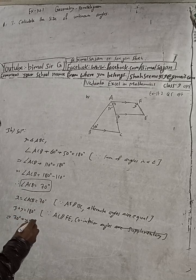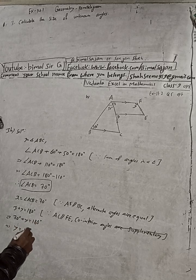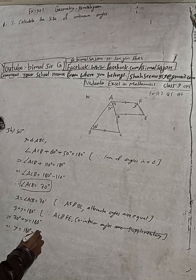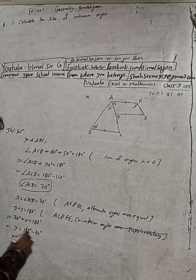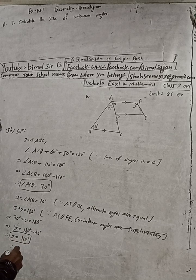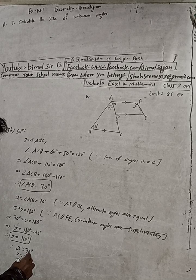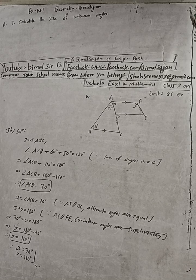Solving this: x is 70 degrees, so 70 plus y equals 180 degrees. This implies y equals 180 minus 70, therefore y equals 110 degrees. So the answers are x equals 70 degrees and y equals 110 degrees.